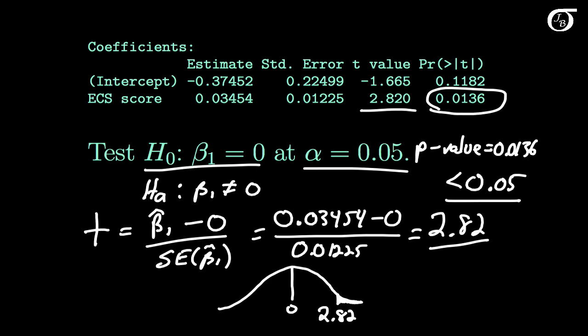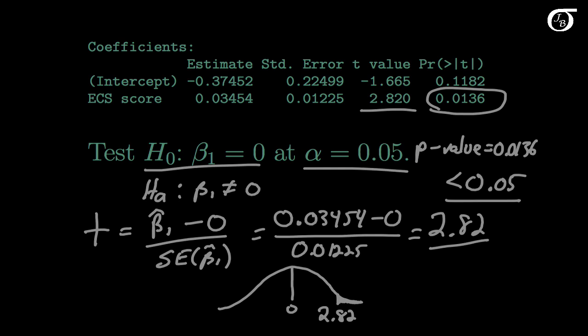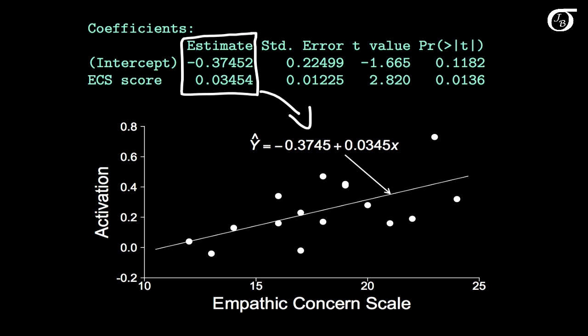But what does that mean in the context of this problem? In the context of this problem, it's saying that what we see here was very unlikely to have occurred due to chance alone, and that there is very strong evidence that this increasing effect that we see here is a real one. As empathic concern scale score increases, the activation level in the pain centers of the brain tends to increase. We have strong evidence of a real relationship between these variables.